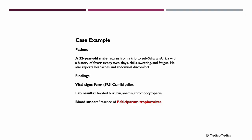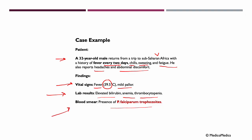In our case example, a 32-year-old male returns from a trip to sub-Saharan Africa with a history of fever every two days, chills, sweating, and fatigue. He also reports headaches and abdominal discomfort. Vital signs show fever of 39.5 degrees Celsius and mild pallor. Lab results reveal elevated bilirubin, anemia, and thrombocytopenia. A blood smear finds the presence of plasmodium falciparum trophozoites, confirming malaria.